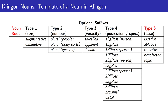If a Klingon noun has a type 5 suffix, it could occur immediately after the type 4 suffix if there is one; otherwise after the type 3 suffix, or after the type 2 suffix, or after the type 1 suffix if there is one. If there is no type 1, type 2, type 3, or type 4 suffix, the type 5 suffix would immediately follow the noun root.